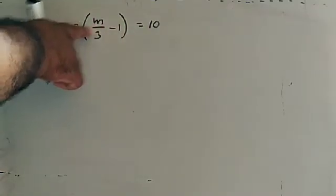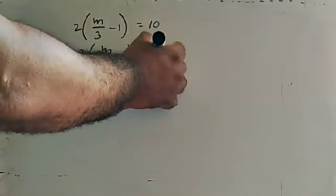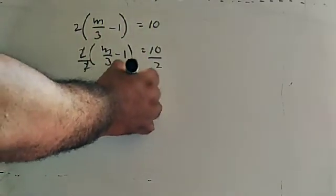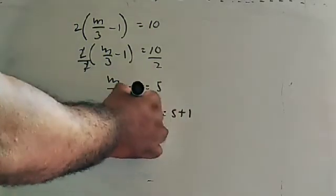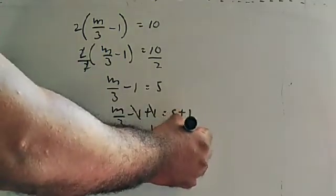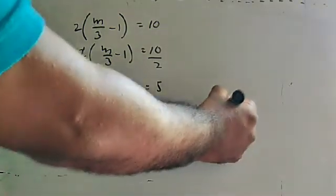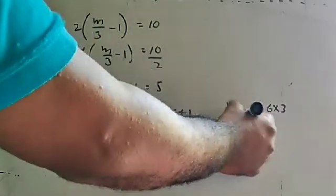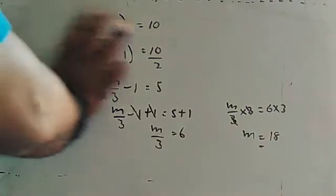Another example: 2 times (m upon 3 minus 1) is equal to 10. There is parenthesis and multiplication by 2. To cancel, divide both sides by 2. Two and 2 cancel, leaving m upon 3 minus 1 equals 10 divided by 2, which is 5. To cancel minus 1, add plus 1 to both sides. Minus 1 and plus 1 cancel. So m upon 3 equals 5 plus 1, which is 6. Now this is an algebraic fraction. Multiply both sides by 3. Three and 3 cancel. M is equal to 6 into 3, which is 18. The value of m is 18.